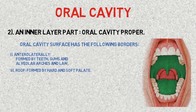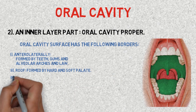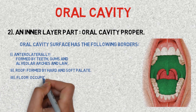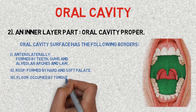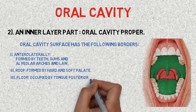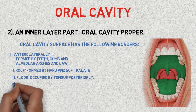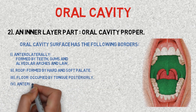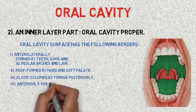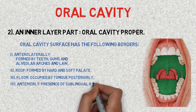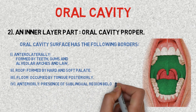The third part is the floor, which is occupied by the tongue posteriorly. The fourth part is the anterior surface, formed by the presence of the sublingual region below the tip of the tongue.